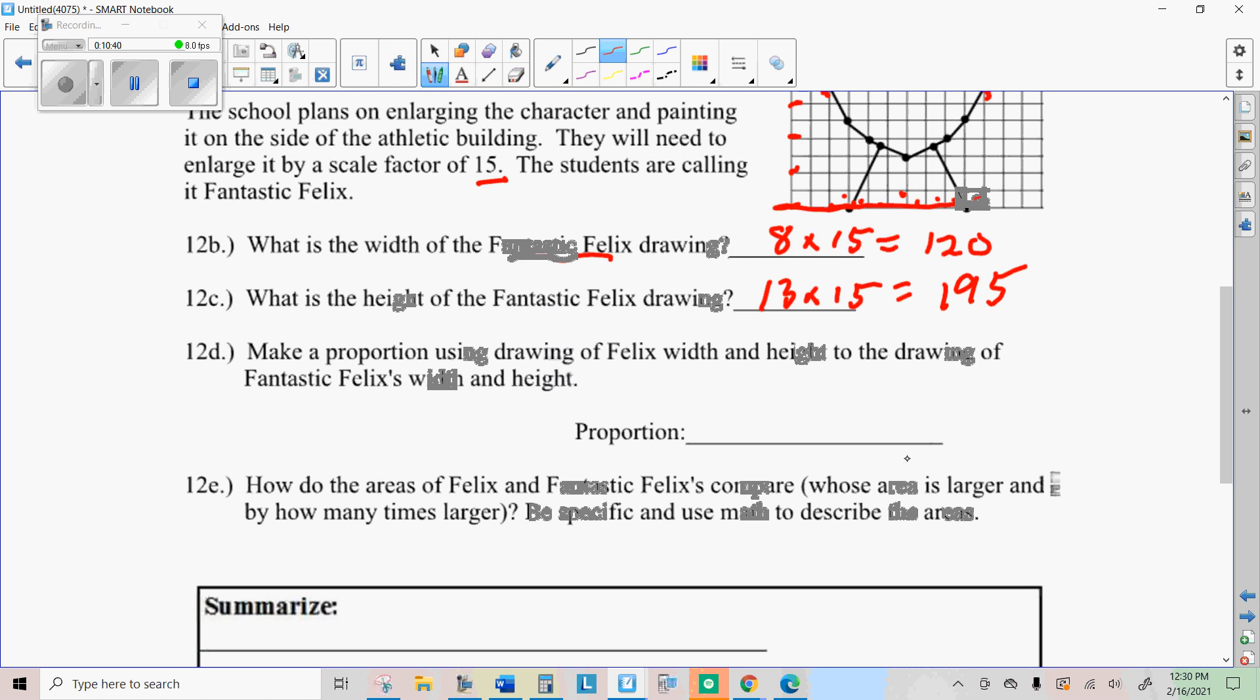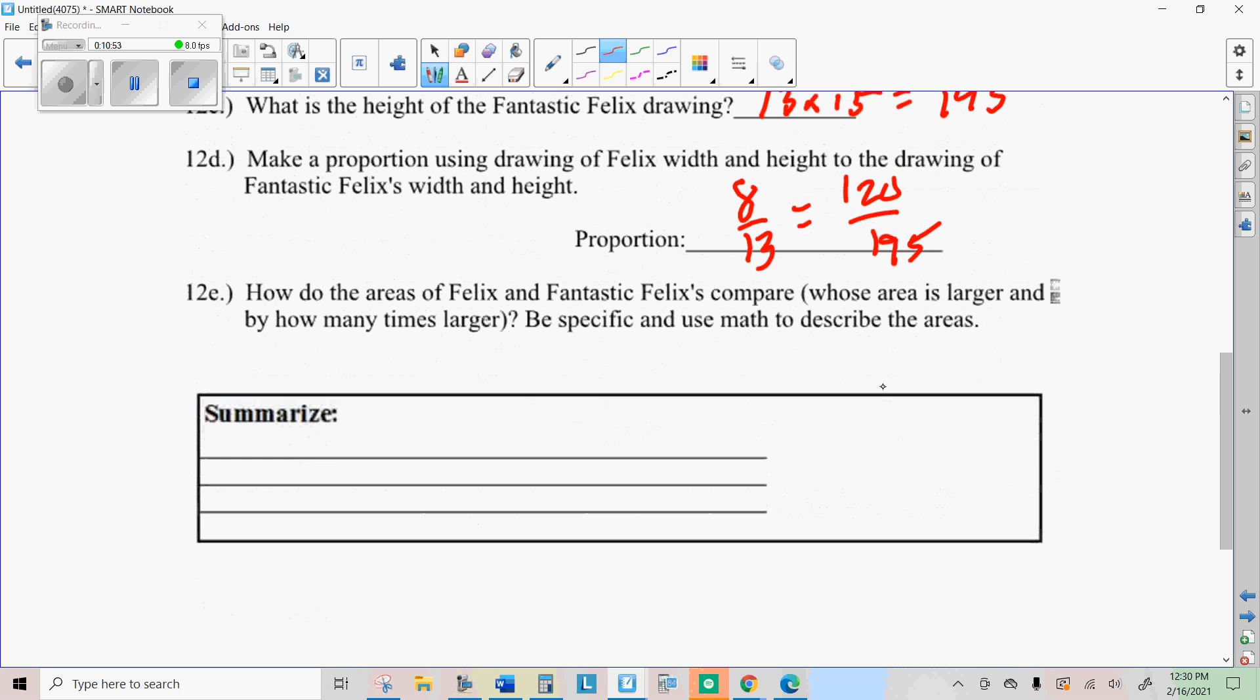So make a proportion using the drawing of Felix's width to height to the drawing of fantastic Felix's width to height. So eight over thirteen equals 120 over 195.